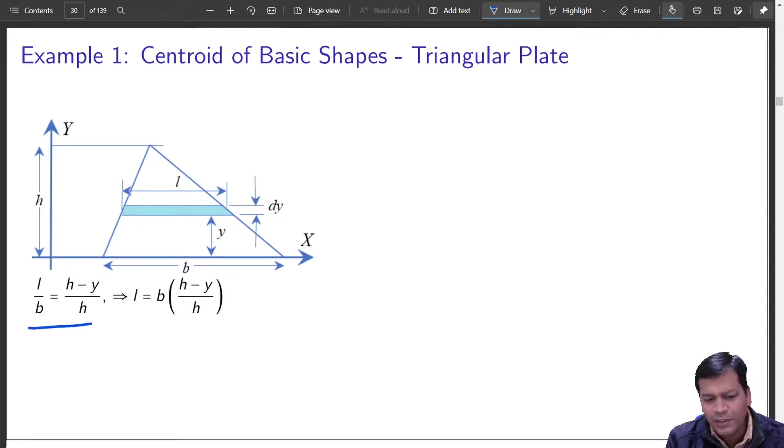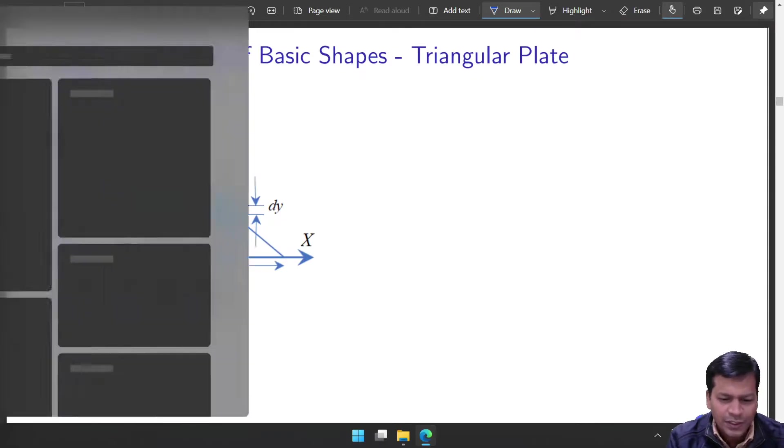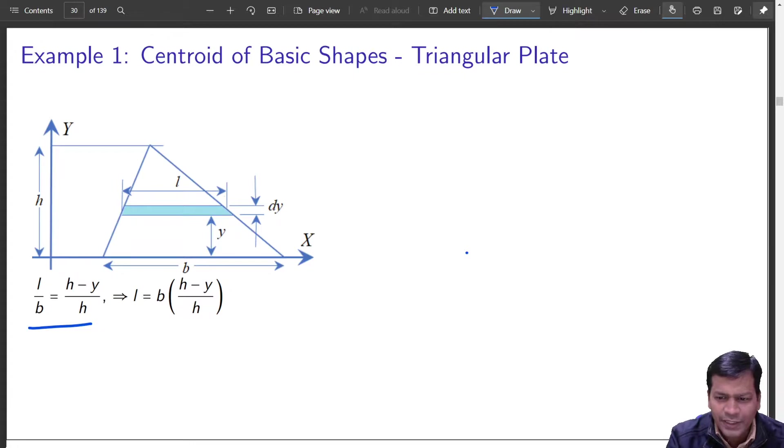From here to here, it will have a linear variation of that particular strip length. L will grow gradually from 0 over here to B over here. So that is what we will use now, we will try to do that by small exercise. This is using proportionality. Yes, using similar triangle or proportionality, you can do this.